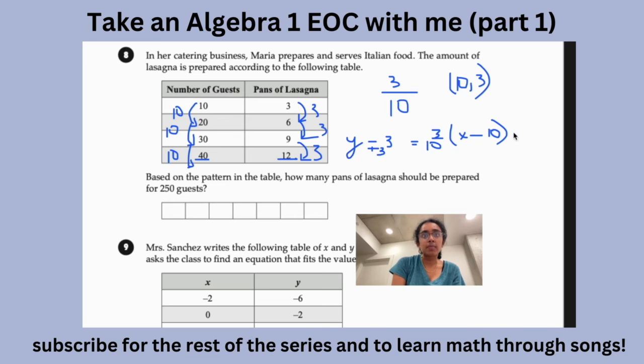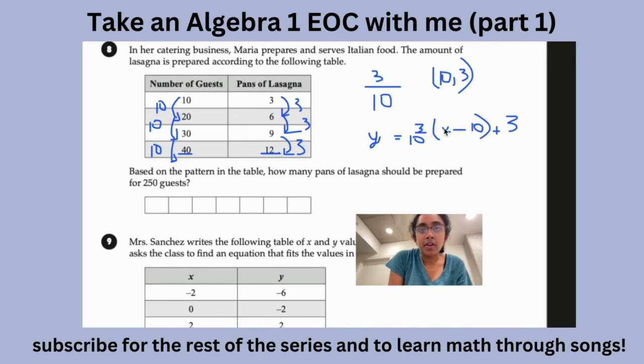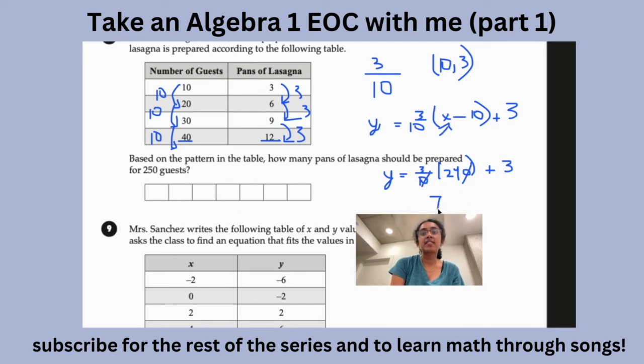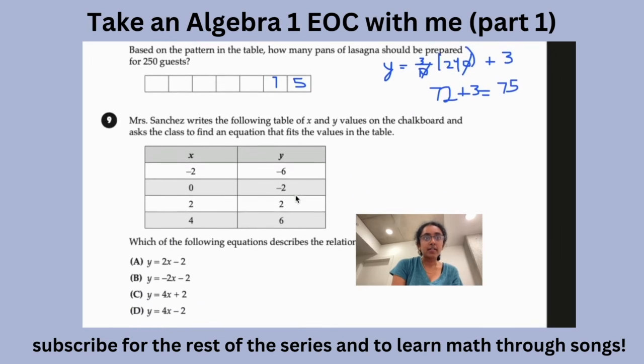So then you would just add 3 to both sides. So then you would have y. So now let's plug in 250 in here. So y equals 3/10 times, just 250 minus 10, so that's 240, and then you add 3. So then you would do that. So you would have 24 times 3 is 72, plus 3 is 75. So it would be 75 pans of lasagna. Now, 75. Now let's move on to number 9.